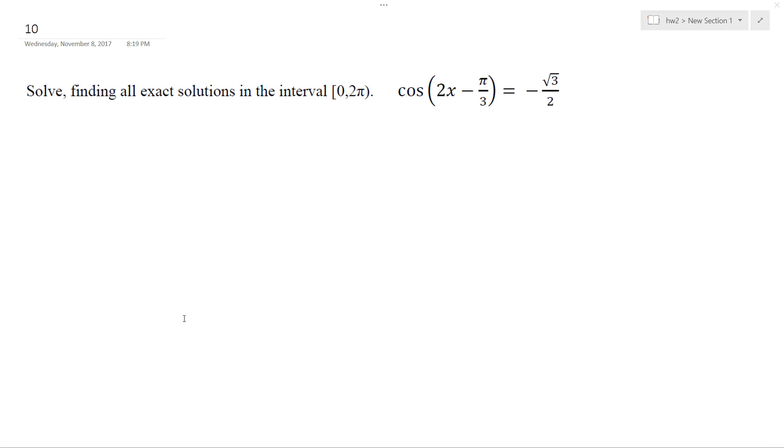So we want to find all solutions for this instance. First thing I'm going to do is take the arc cosine of both sides. So what that does is that drops the cosine over here, but I've got to find the arc cosine of negative root 3 over 2.